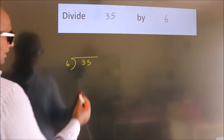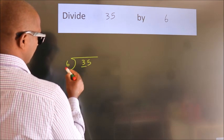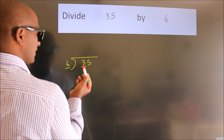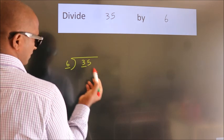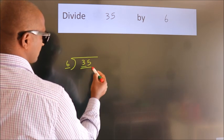Next, here we have 3, here 6. 3 is smaller than 6, so we should take 2 numbers: 35.